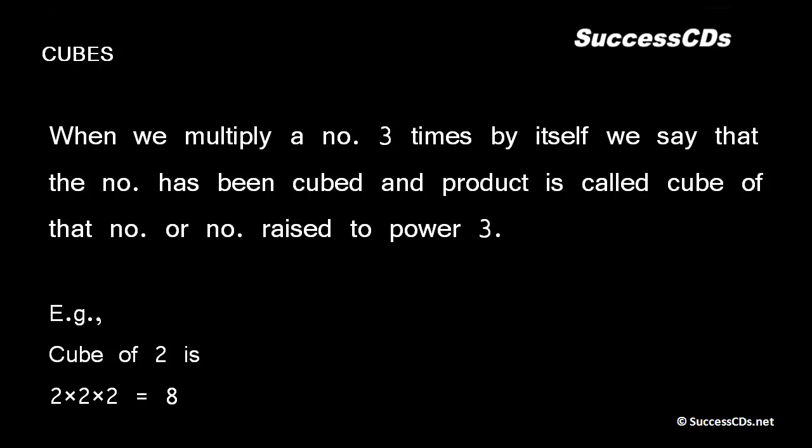For example, when we say what is the cube of 2, we mean number 2 is being multiplied 3 times by itself and the product is 8. That means 2's cube is 8. Similarly, 3's cube is 3 into 3 into 3, which is equal to 27.